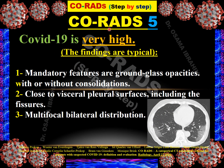I prefer to start with CO-RADS 5 because it means a very high possibility of COVID-19 and has typical findings on HRCT. These findings are: presence of ground glass opacity, multiplicity of lesions, and location based on the pleural surface. If all three patterns are present, it represents a typical finding for COVID-19 diagnosis and is classified as CO-RADS 5, meaning COVID-19 is very highly suspected.